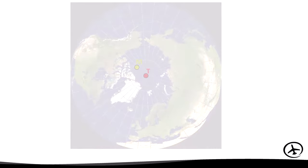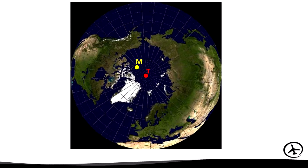Looking at the earth from a top-down view, the red point represents the geographic north pole and the yellow one represents the magnetic north pole. From the position marked with the white cross, even though the poles are not in the same place, they appear in the same direction, so the magnetic variation is zero — there is no angular difference. Moving to a new position, there is now an angular difference: magnetic north is to the left of true north, meaning it is to the west, so we have a west variation.